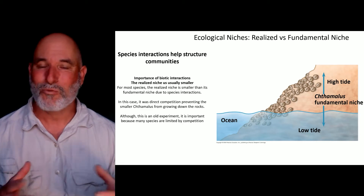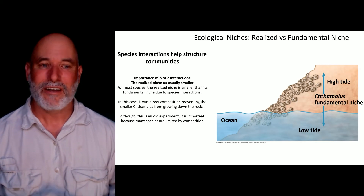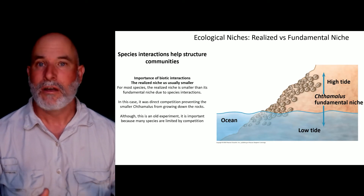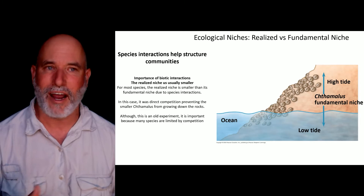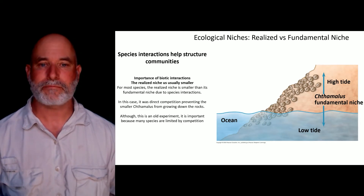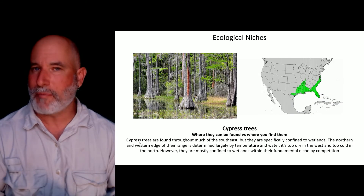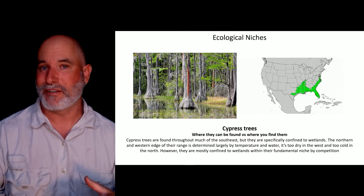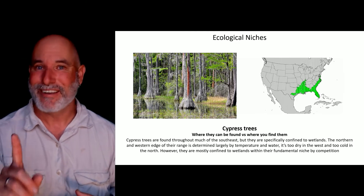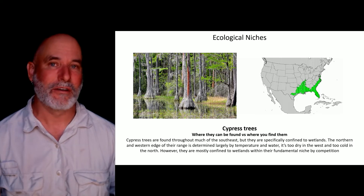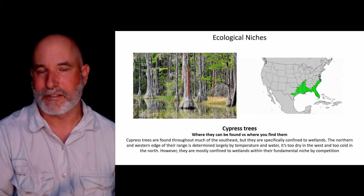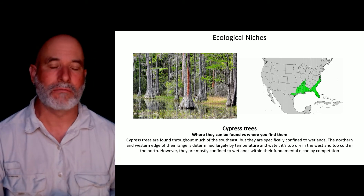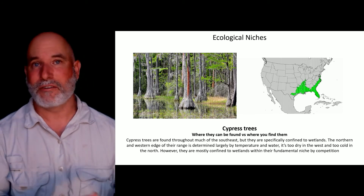Now we know at least two factors determine the distribution of this community, and we wouldn't have known that without doing an experiment. This shows the importance of species interactions in determining the realized niche — competition is driving that community structure. There are other types of species interactions to discuss. Returning to the cypress tree example: cypress trees can be found throughout the southeast, but we only find them in wetlands.